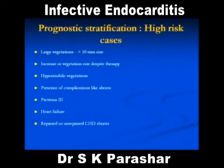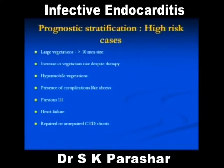What are the high-risk cases? The larger the vegetation, increase in vegetation size despite therapy, hypermobile vegetation — more chances of embolization — presence of complications, previous infective endocarditis, heart failure, renal failure. In day-to-day practice: the larger the vegetation, the more mobile the vegetation, and vegetations present on prosthetic valves have a very poor prognosis.